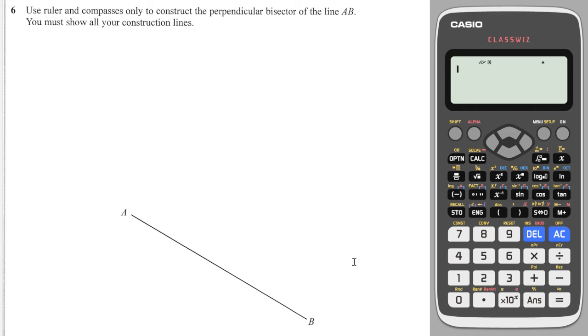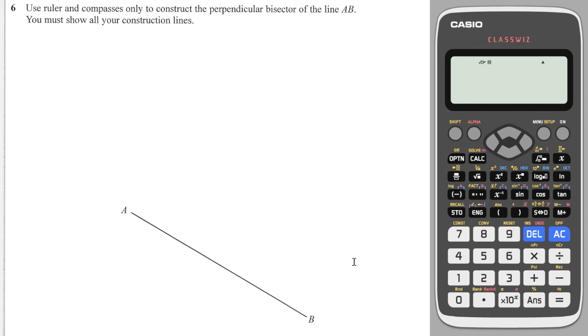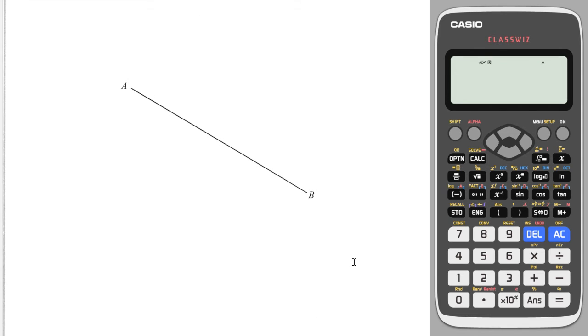Okay. Next question. You're asked to do the same thing but the line is slanted. But no problem. We do exactly the same thing. We put our needle at point A. We then draw a semi-circle as long as it's more than halfway. That's a pretty good one if I don't say so myself.